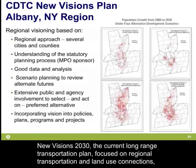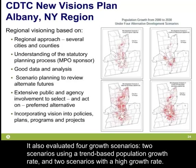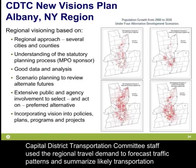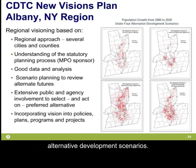New Visions 2030, the current Long-Range Transportation Plan, focused on regional transportation and land use connections and introduced scenarios to understand potential future transportation outcomes of current land use and community planning decisions. It evaluated four growth scenarios — two using a trend-based population growth rate and two with a high growth rate. Capital District Transportation Committee staff used regional travel demand forecasting to project traffic patterns and summarize likely transportation investment needs for each scenario. The maps on the slide show population growth from 2000 to 2030 under the full alternative development scenarios.